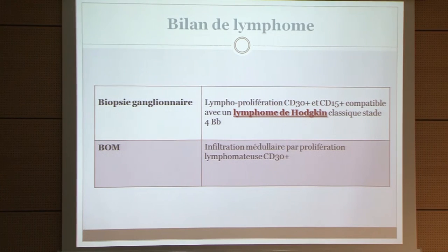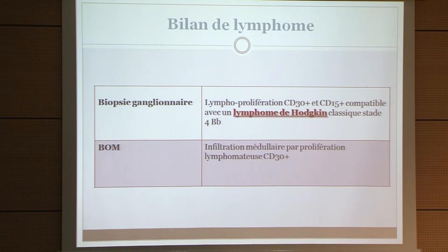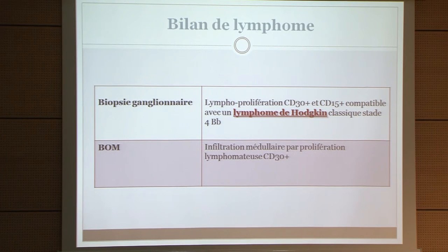A second lymph node biopsy was performed and this time revealed a CD30-positive and CD15-positive lymphoproliferation, compatible with classical Hodgkin lymphoma, stage 4, bulky B symptoms. Bone marrow biopsy showed medullary infiltration by CD30+ lymphomatous proliferation.